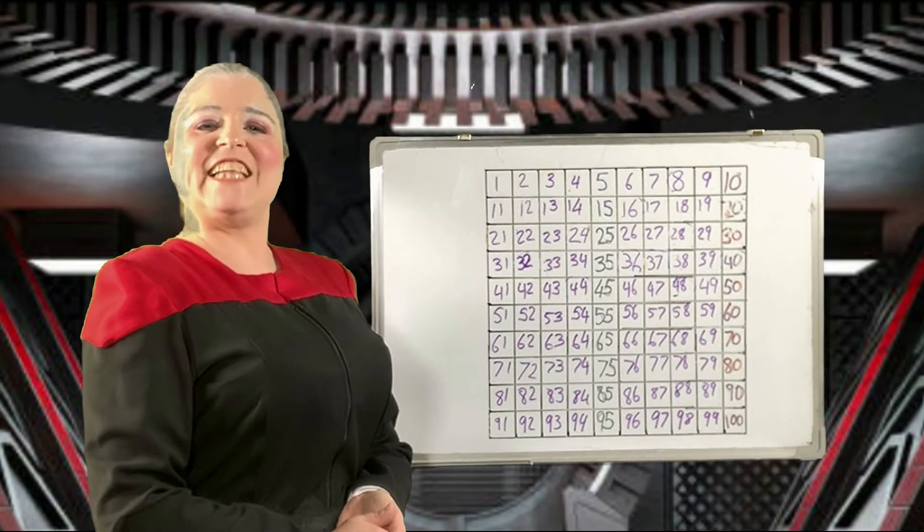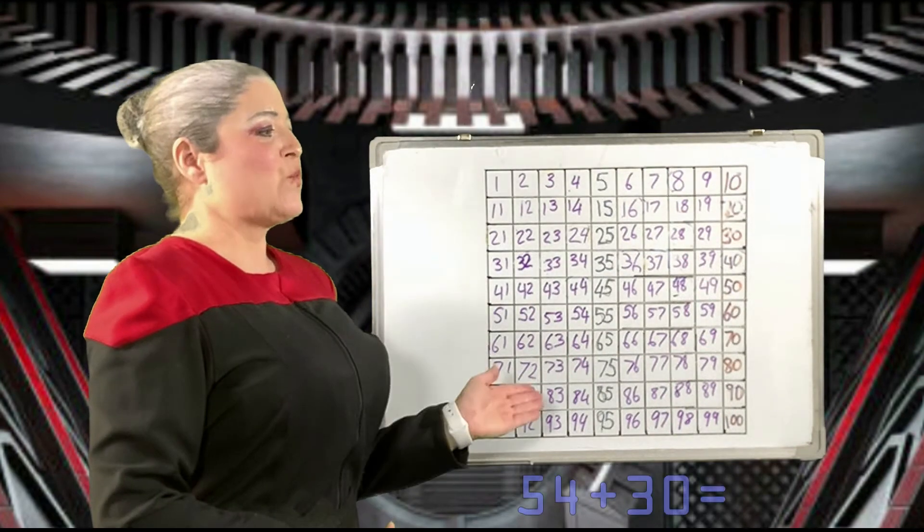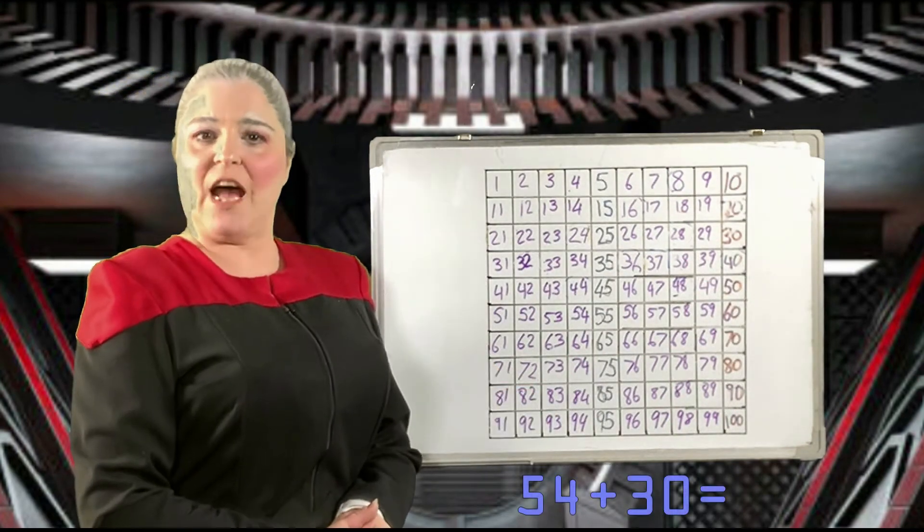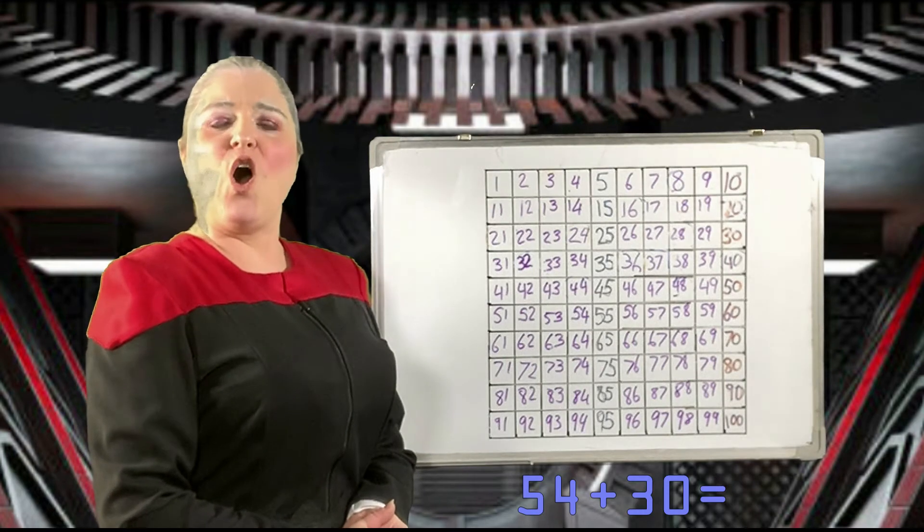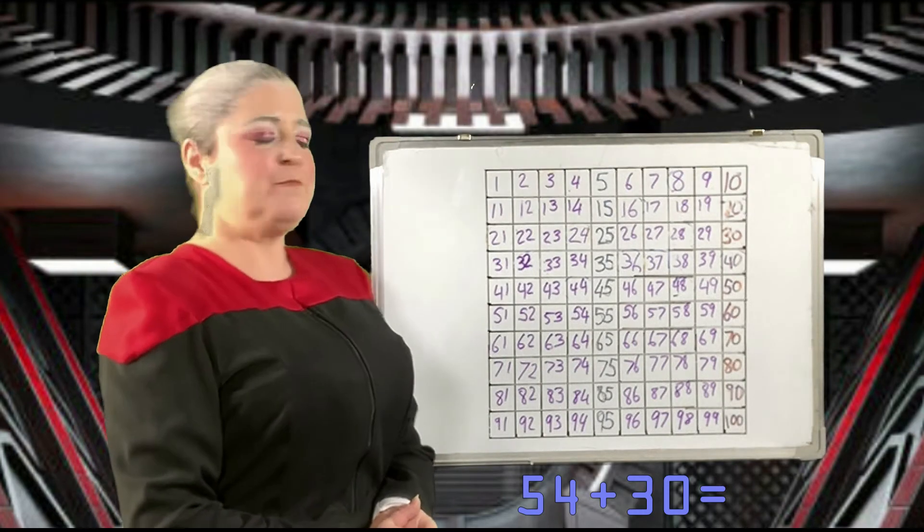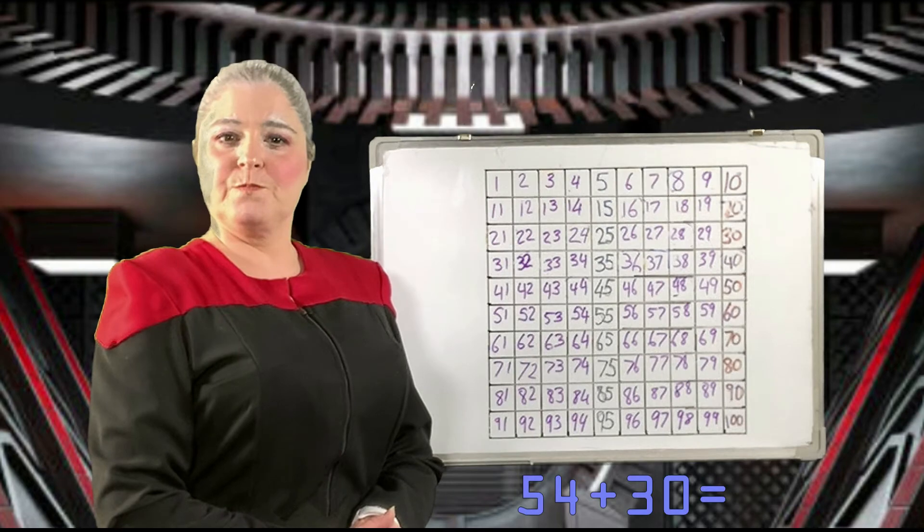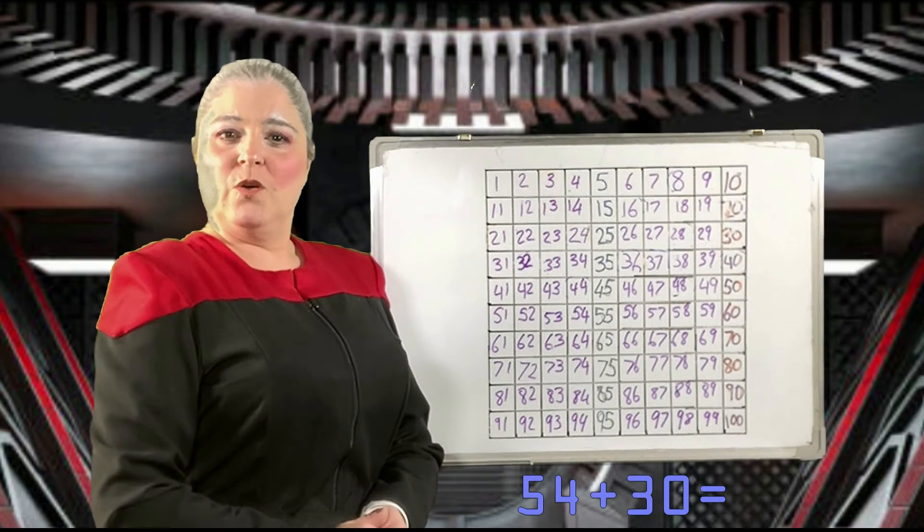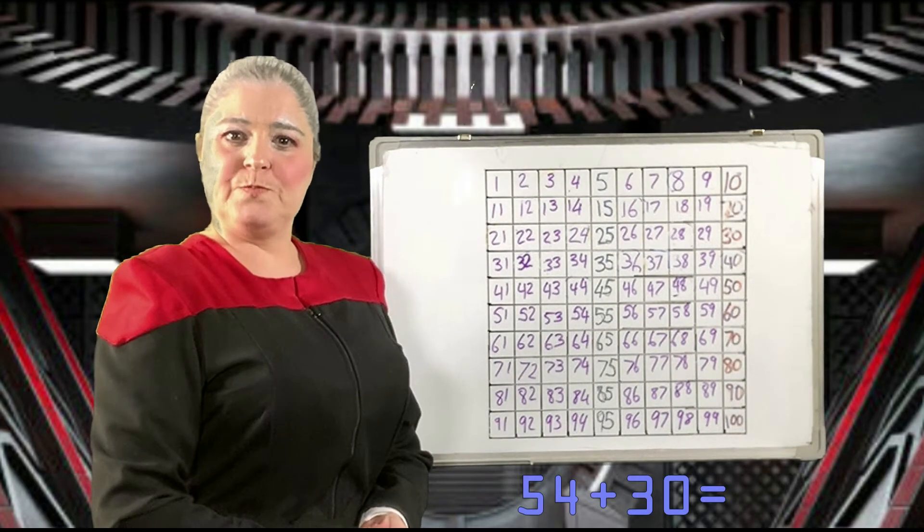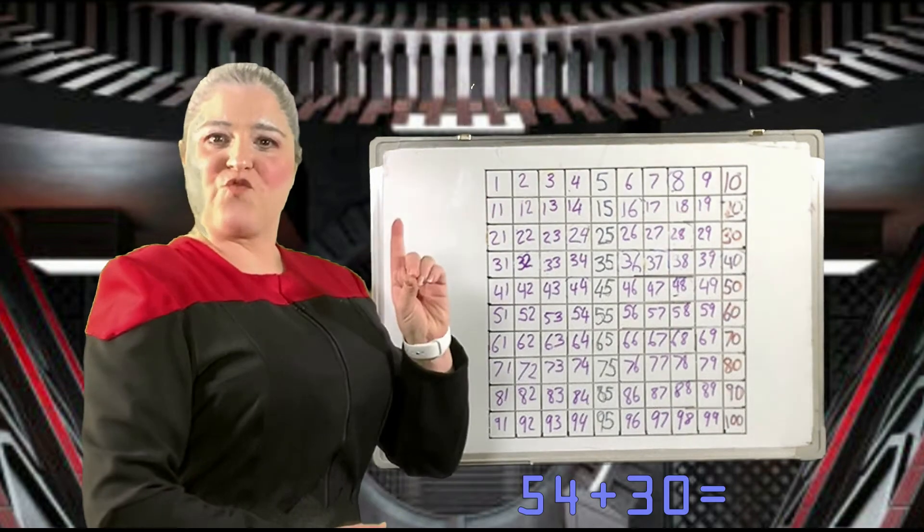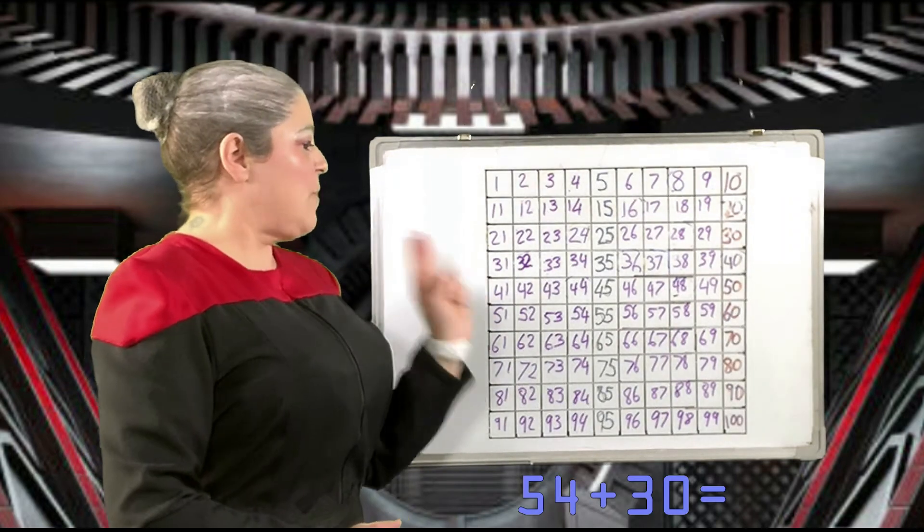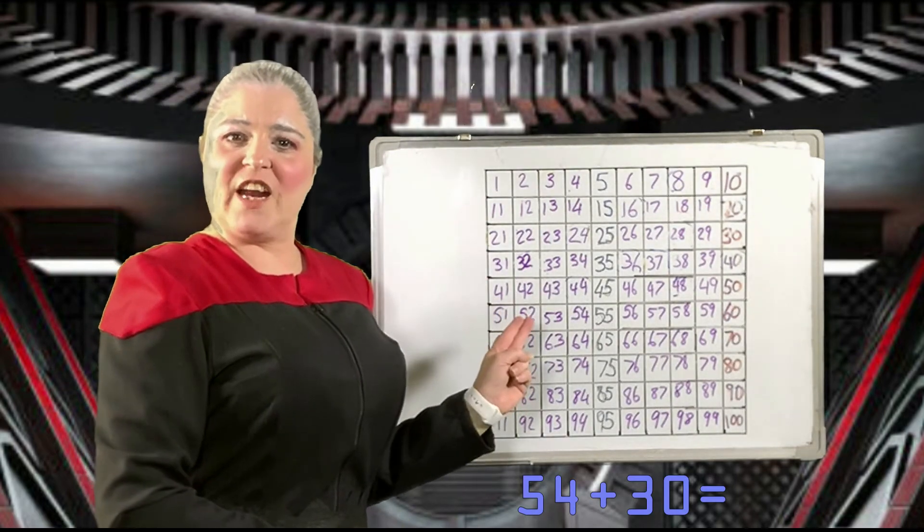All right, cadets. Write down this sum: 54 plus 30. Do you remember what to do? That's right. We start by marking the number 54 on our number squares.